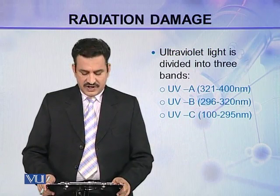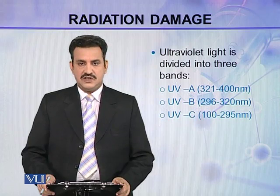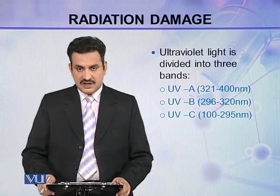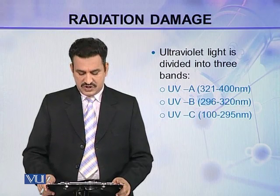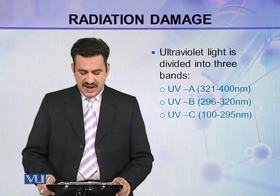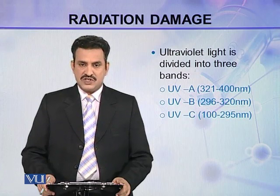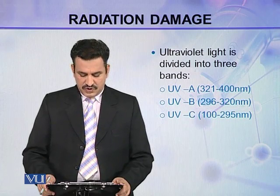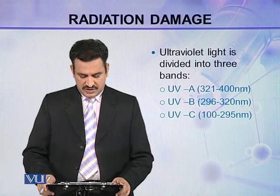Ultraviolet light is divided into three bands: UVA, UVB, and UVC. The UVA band has a wavelength between 321 to 400 nanometers, the UVB band has a wavelength between 296 to 320 nanometers, and the UVC band has a wavelength between 100 to 295 nanometers.